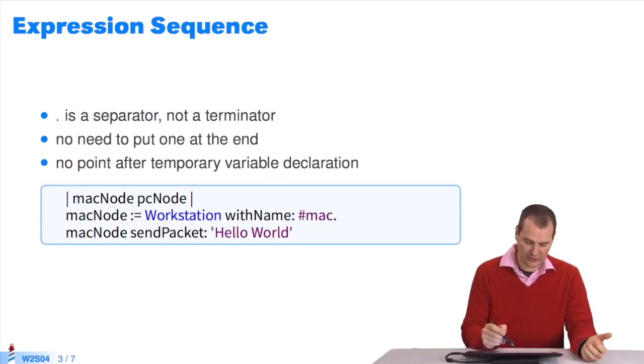Let's see another example. I've defined two local variables. I define a workstation, which is a network simulator. I write a period, as it's the end of this expression. I continue with the next expression. I could have used a period here. As I explained, a period is a separator, not a terminator. In Java, you must use a semicolon here and there. In Pharo, you don't have to.